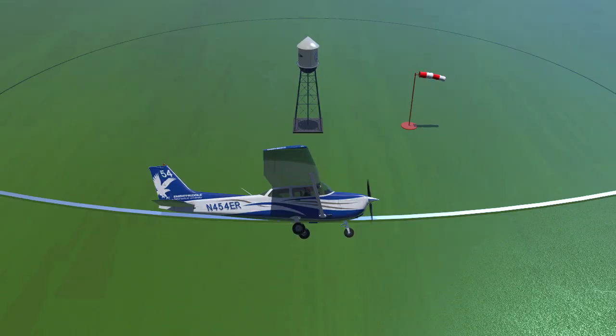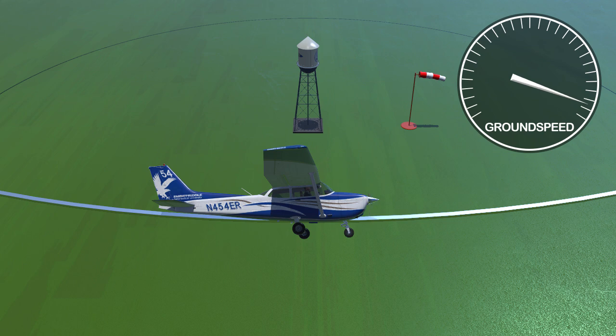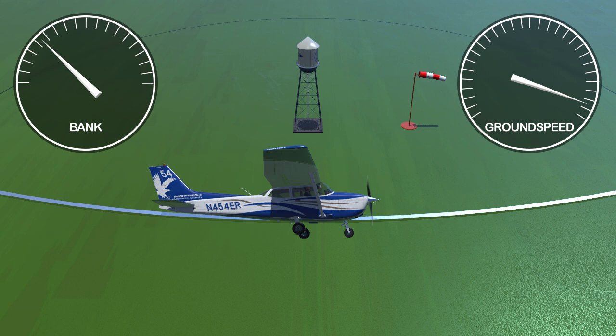When flying on the downwind heading, your ground speed will be the greatest. This part of the circle will require the steepest angle of bank and the fastest rate of turn.